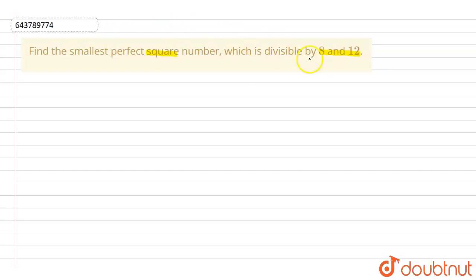Now we know that to find the perfect square number, first of all we will be finding out the LCM of both of these numbers. So to find out the LCM, we will take 8 and 12.